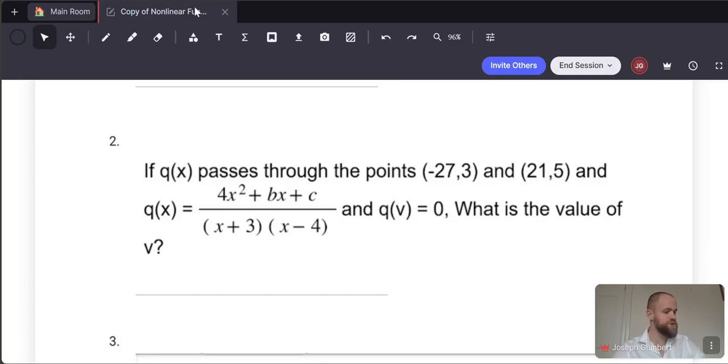And so in this question here they ask, what is the value of v if q(v) is equal to 0? So this equals 0 would indicate that it's at the x-axis, because it's y equals 0, right? And so we get negative 9, then that's the correct answer here.